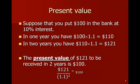So we say that the present value of $121 to be received in two years at a 10% discount rate would be 121 divided by 1.1 squared, because of the compounding factor I mentioned, which is exactly equal to $100. So that's the type of calculation that we'll do to obtain the present value.